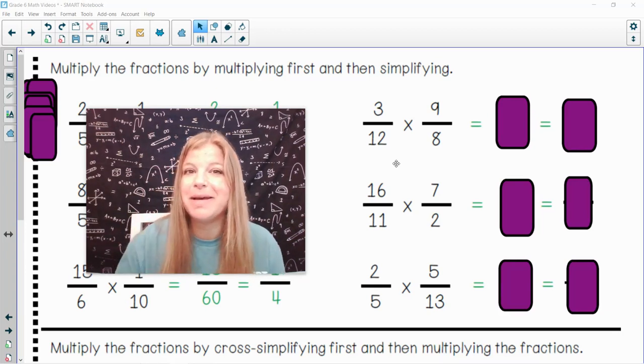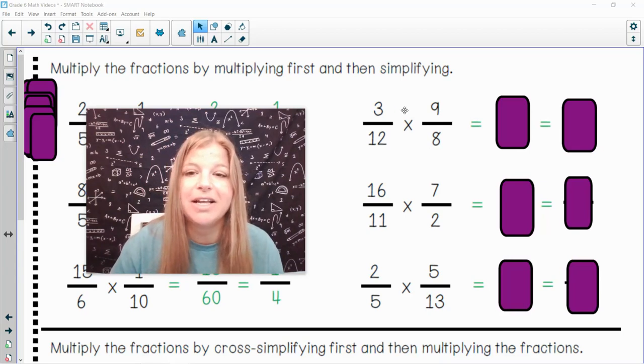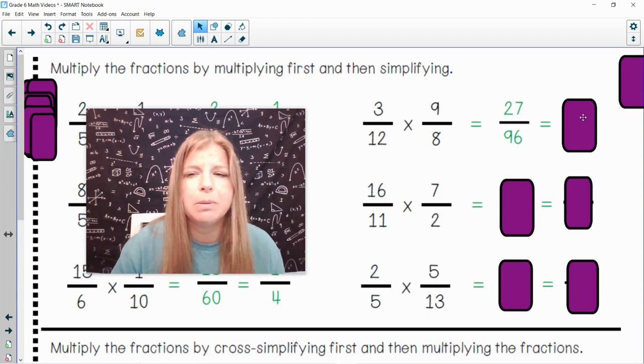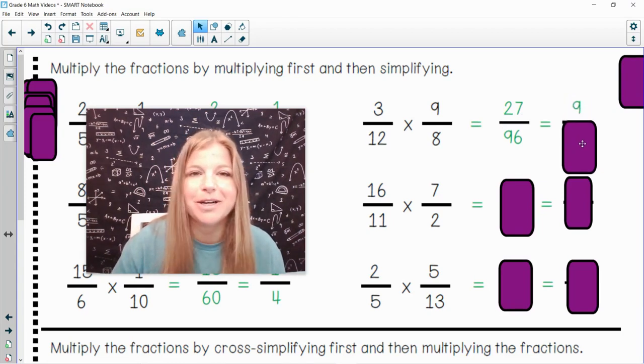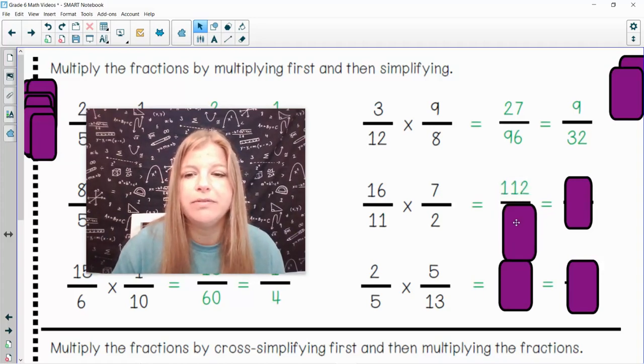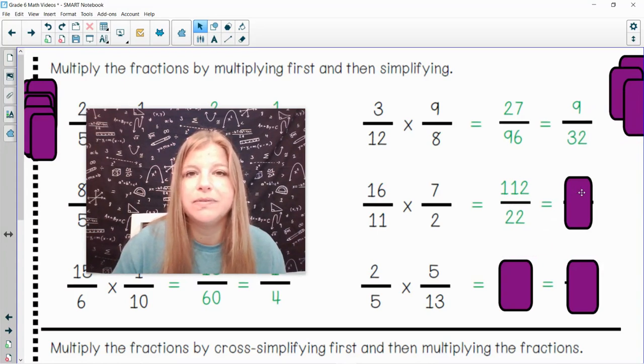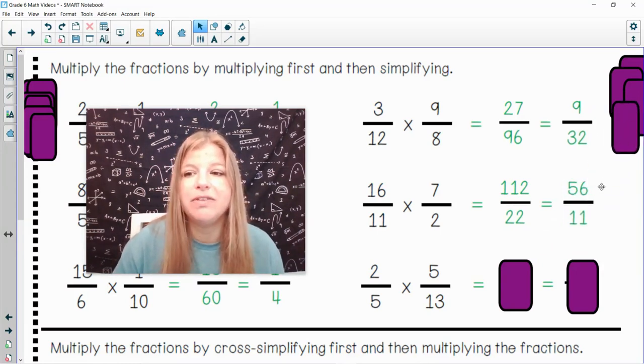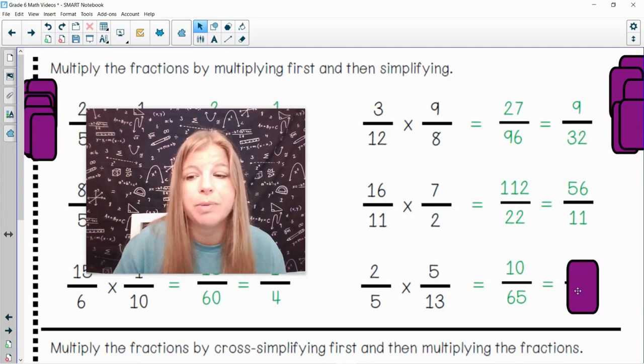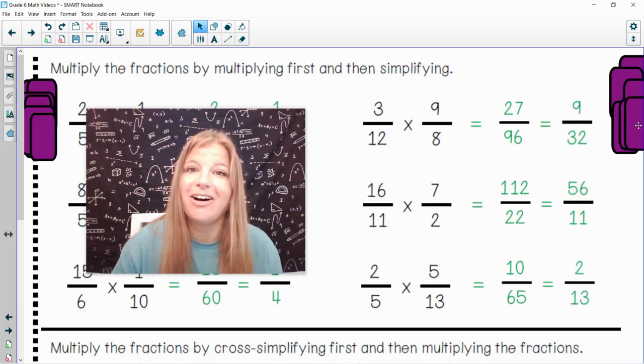Hopefully you're joining me back after pressing play to check your answers. Let's take a look. 3 times 9 is 27. 12 times 8 is 96. They are both divisible by 3, and that would give me 9 over 32. 16 times 7 is 112 over 22. They are both divisible by 2, and we should get 56 over 11. 2 5ths times 5 13ths. Multiply straight across. 2 times 5 is 10. 5 times 13 is 65. Those are both divisible by 5, and if I divide them both by 5, I get 2 13ths. Awesome. I hope you did well.